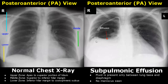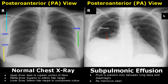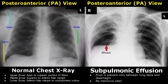Subpulmonic effusion is a type of pleural effusion in which fluid is present only between the lung base and the diaphragm. The meniscus is not found here — there are no concave shaped lines seen. The interface is somewhat dome shaped, just like the diaphragm. This feature helps in distinguishing a subpulmonic effusion from a pleural effusion. Here is another image of a subpulmonic effusion with no meniscus seen. It can be further evaluated in a lateral decubitus view.